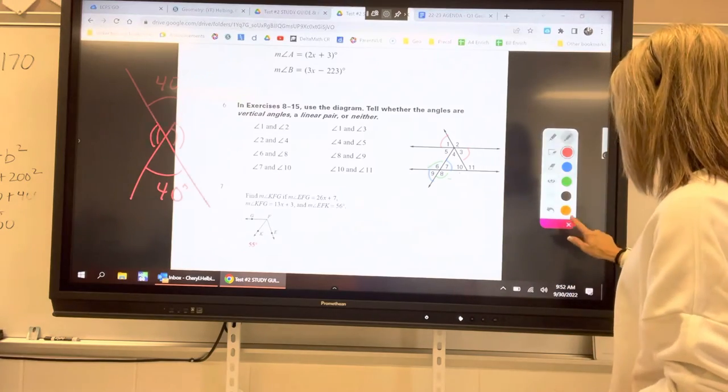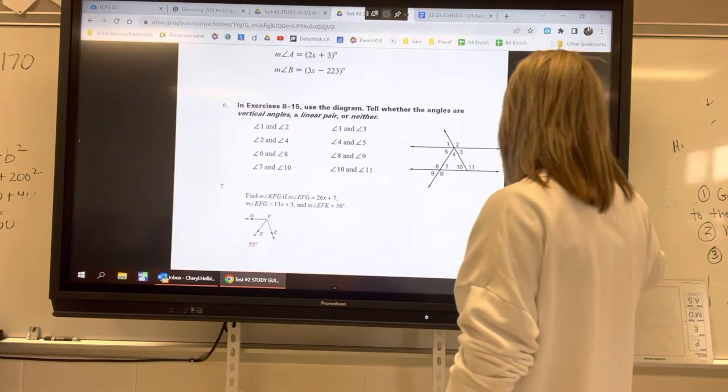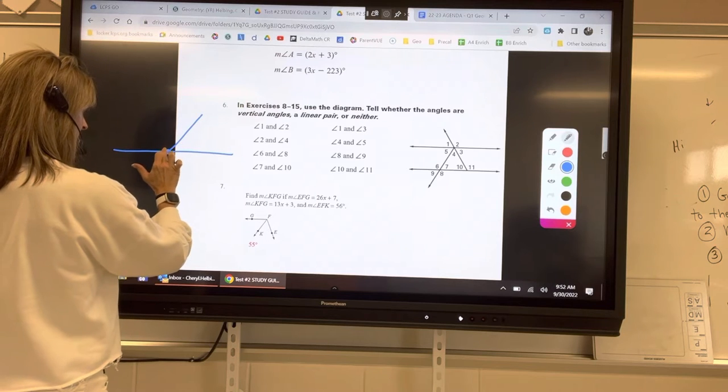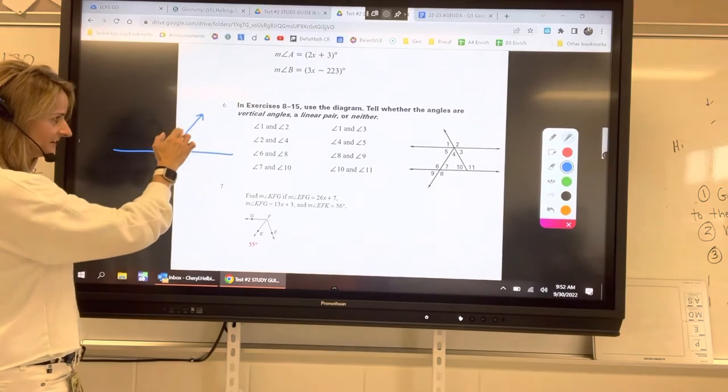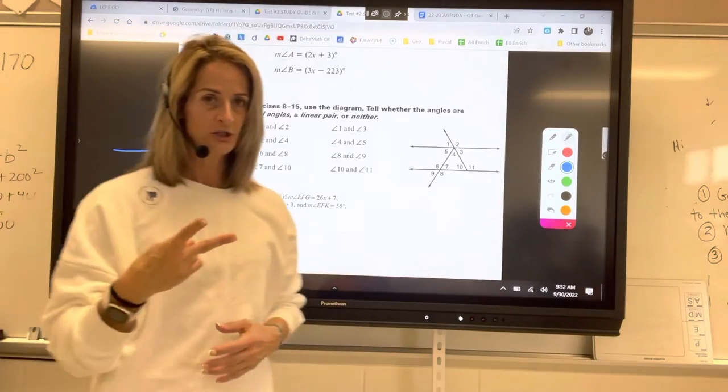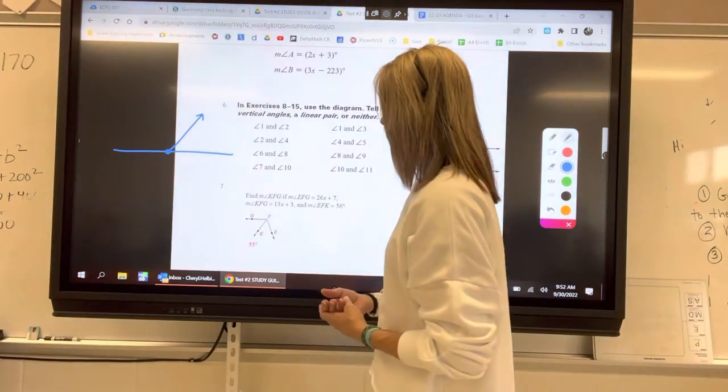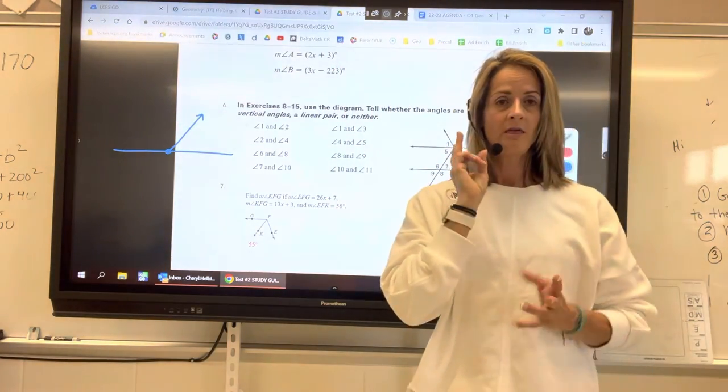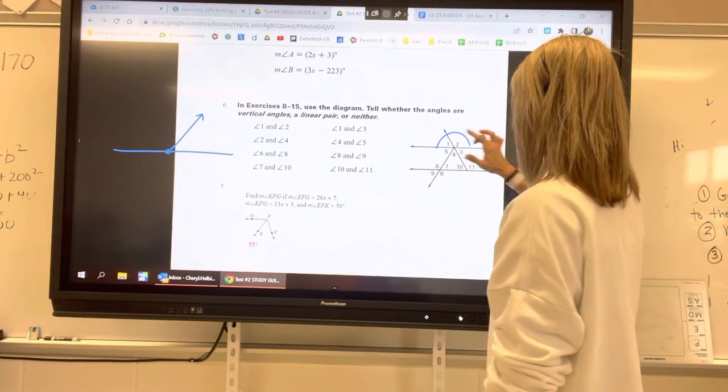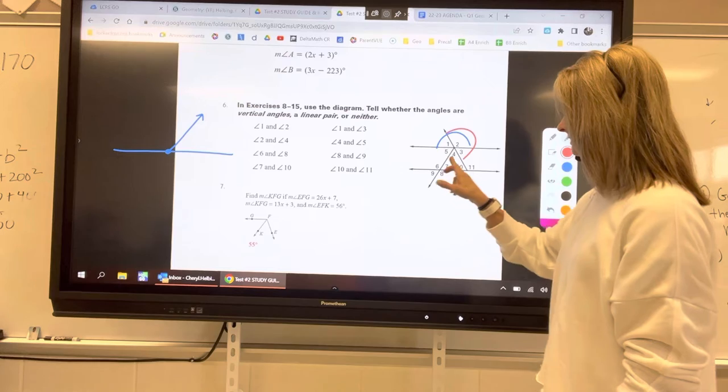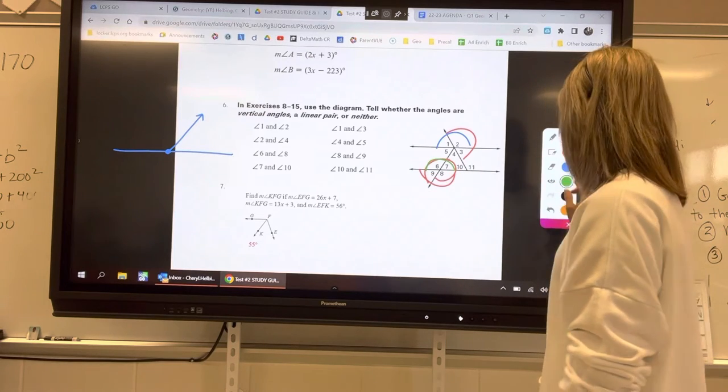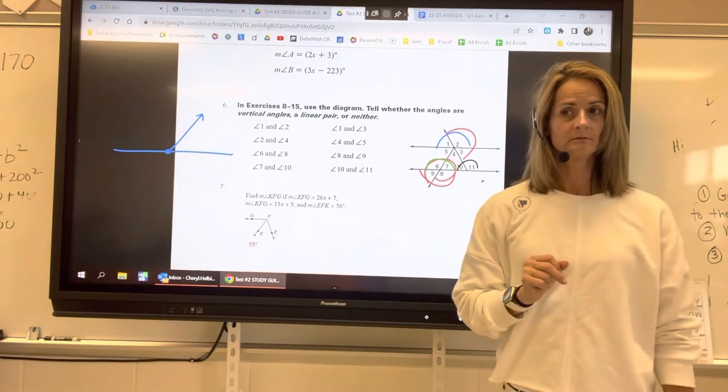A linear pair, and this is just more vocab, two angles that are adjacent. So they have to be right next to each other. They have to share a side and a vertex. Here's the side that they share, and here's the vertex they share. And they form a straight line. So they're a linear pair. Pair means two. Linear means straight line. So where are two angles, just two, that make a straight line in our diagram? We've got one and two. We've got two and three. What else? Six and nine, nine and eight, eight and seven. This is seven and six. Oh yeah, thank you. 10 and 11. Yep. Those are all vertical angles.